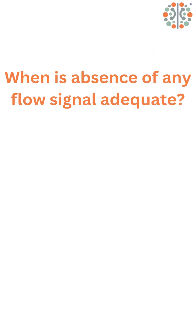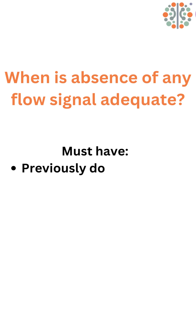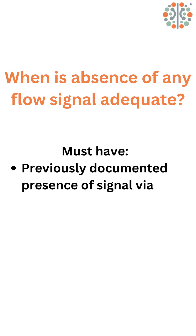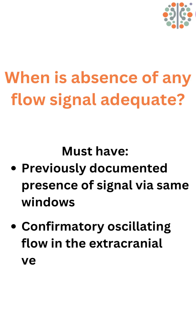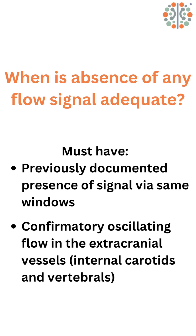There is one situation in which absence of any flow signal is adequate for documentation of brain death. If a patient previously had documented signals in the same windows and now does not, that suggests there is an adequate window, and therefore lack of any flow is due to cerebrocirculatory arrest rather than a technical issue. In this case, documentation of confirmatory oscillating flow in the extracranial internal carotids and extracranial vertebrals must be done and documented.